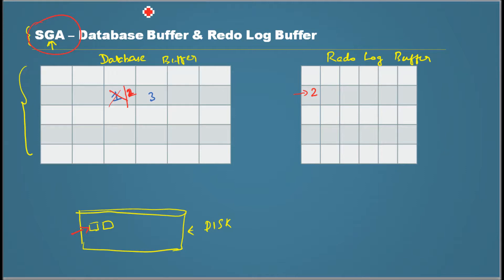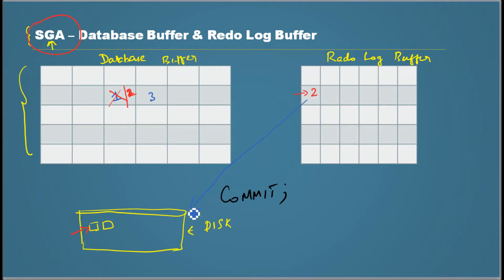The important thing is the data is still uncommitted. Now we issue a commit — the session which made the modification issues a commit. When that happens, the meta information about how the value was changed gets written to disk — specifically it gets written to the redo log file.